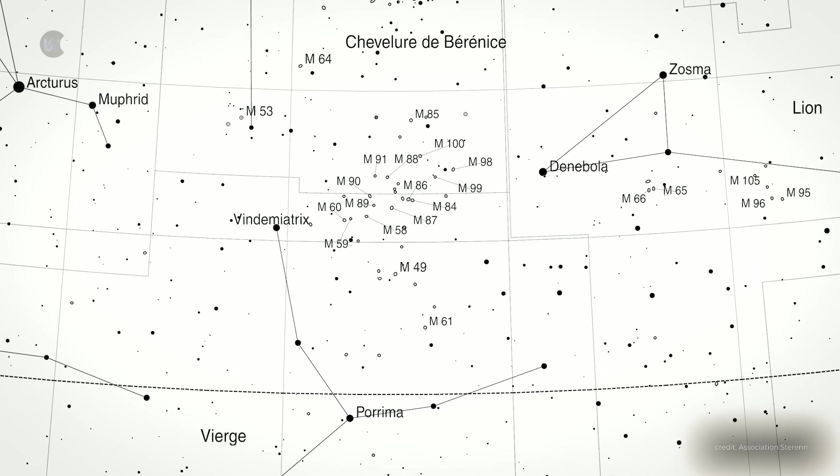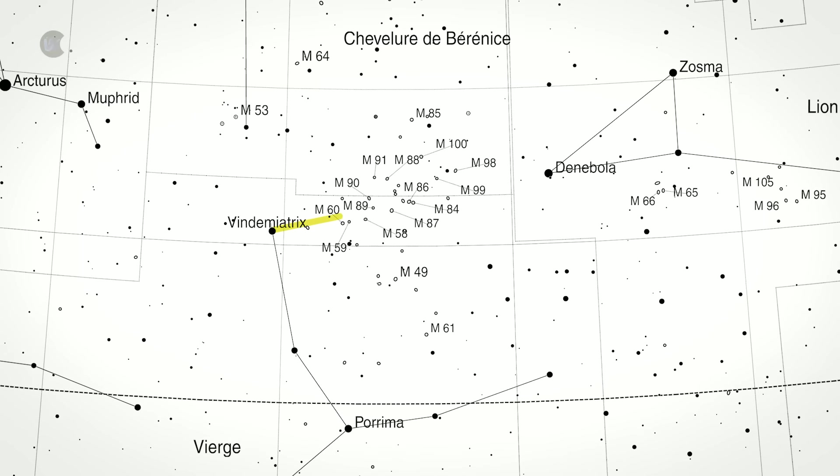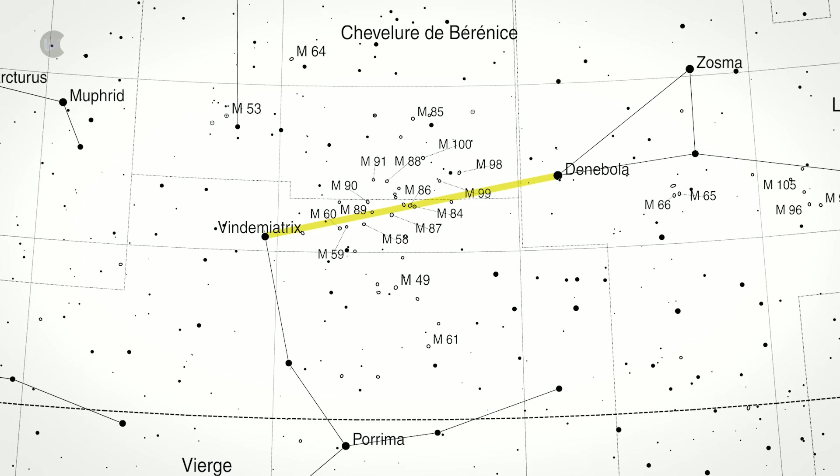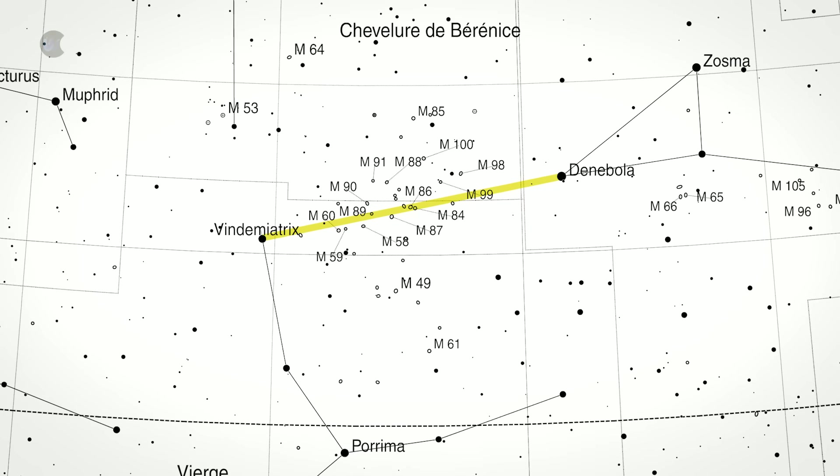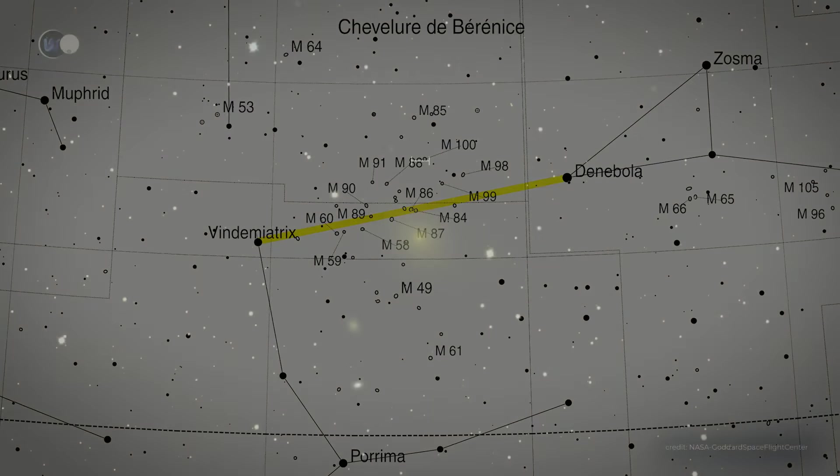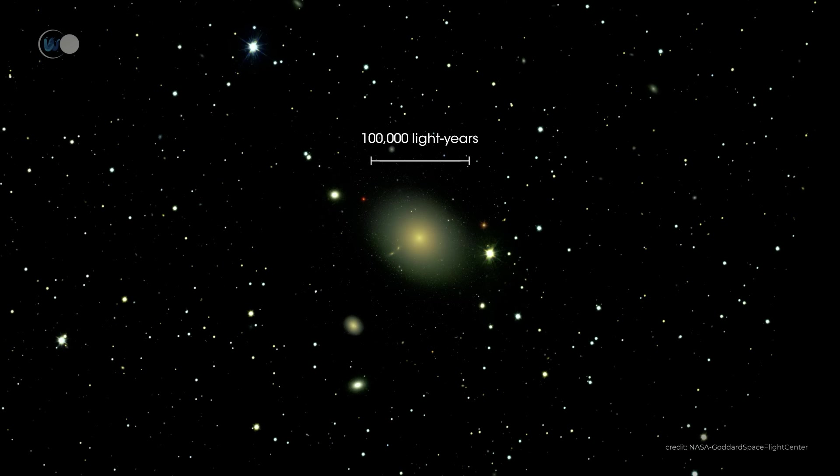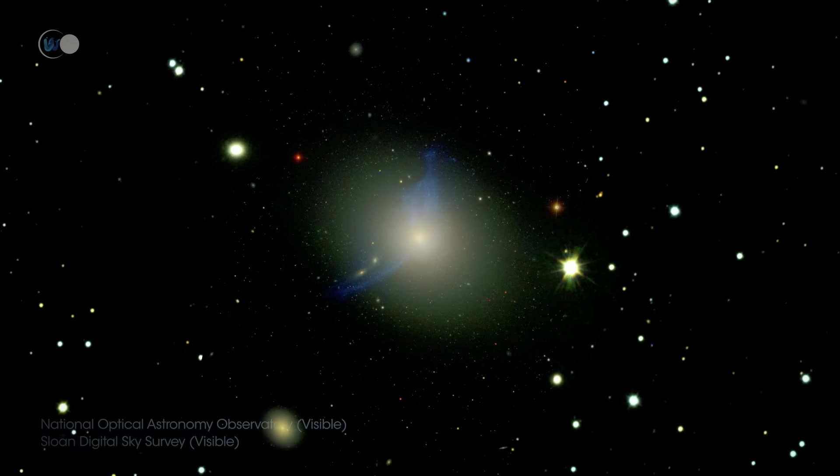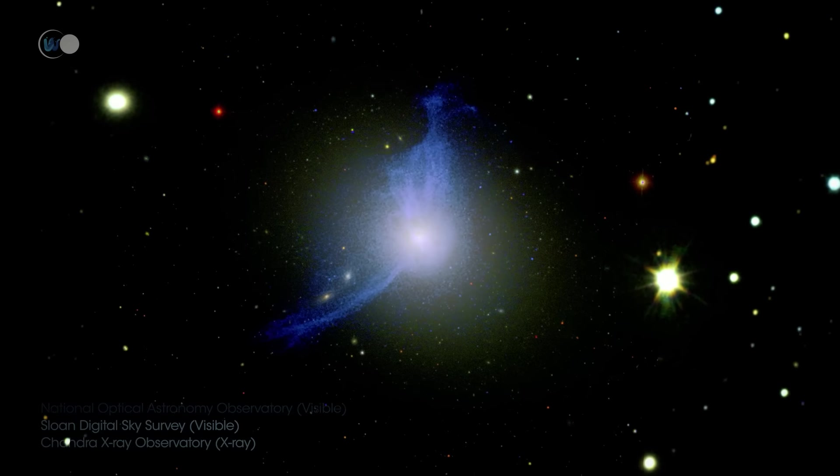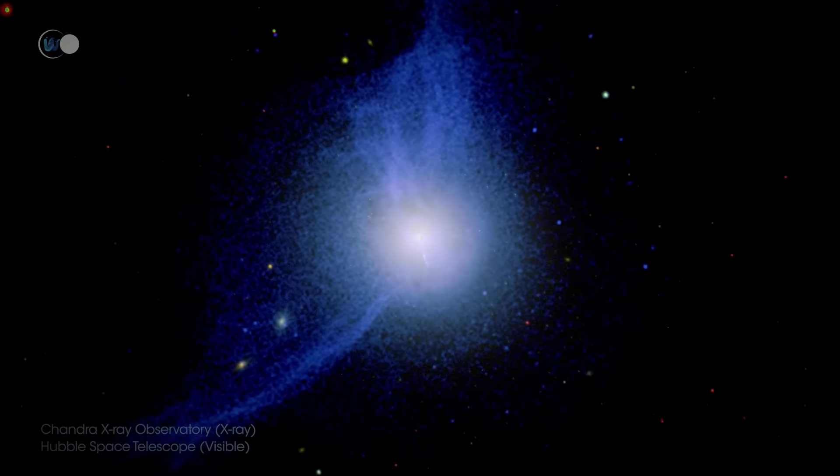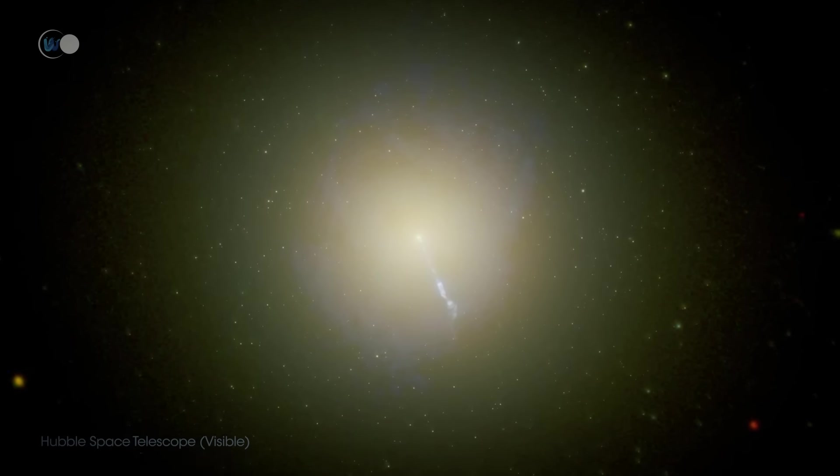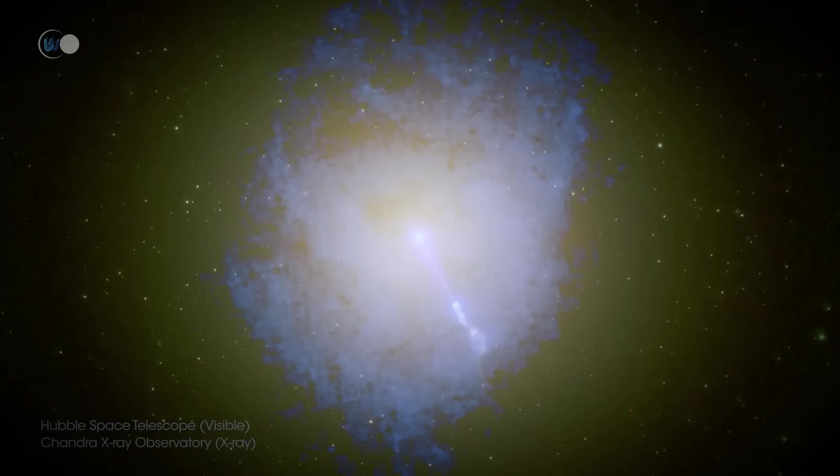Messier 87 lies on a line joining the stars Epsilon Virginis and Beta Leonis near the constellation Bernice's hair, at the northern limit of the constellation Virgo. The galaxy has an apparent magnitude of 9.59. A simple six-centimeter or 2.4-inch diameter telescope can spot it, but its jet is difficult to observe without photographic aid and will require a large diameter telescope and very good observing conditions.